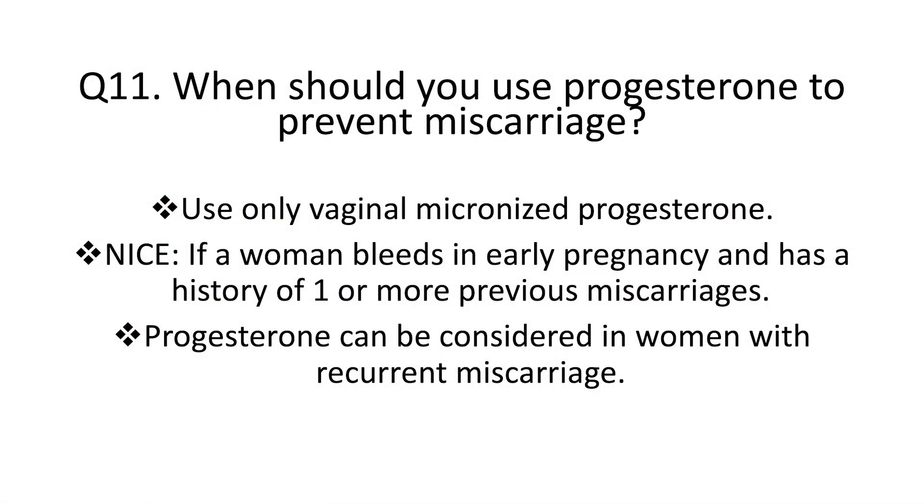So that is 10 questions. But here is a bonus question. Question 11: When might progesterone treatment be useful? The NICE guideline recommends progesterone for women who've had any previous losses — 1, 2, 3, it doesn't matter — and who are currently bleeding in the index pregnancy. For asymptomatic patients, the RCOG guideline suggests progesterone could be considered in women with recurrent miscarriage who aren't bleeding in early pregnancy.